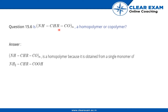The question is: is NH₂CHR·CO·N a homopolymer or copolymer? We all know that a homopolymer is formed by only one type of monomer, whereas a copolymer is formed by two different types of monomers. So it is a homopolymer because it is obtained from a single monomer of NH₂CHR·CO·H.